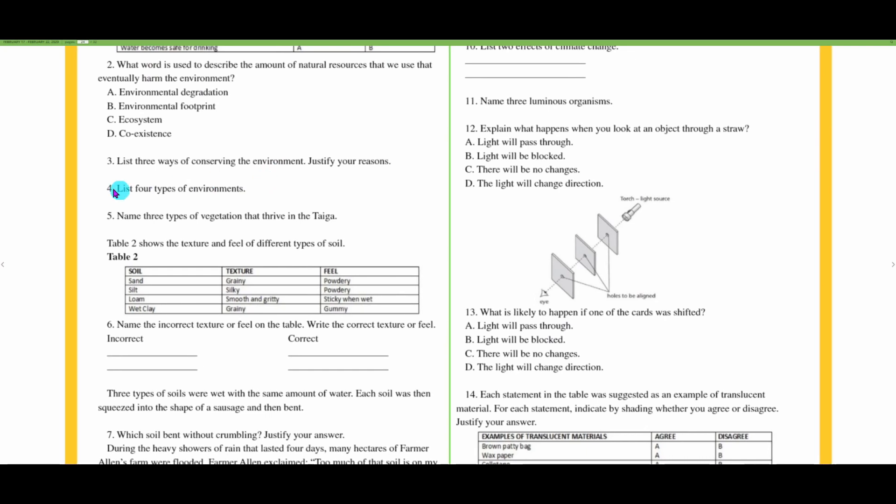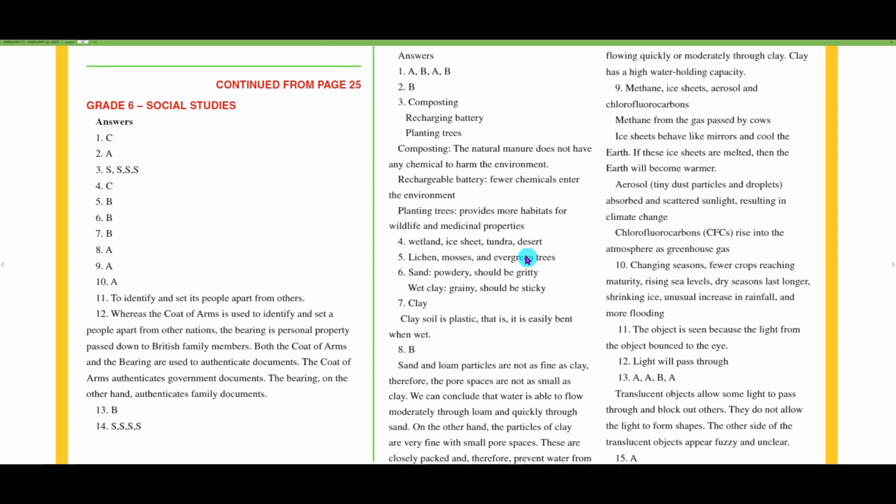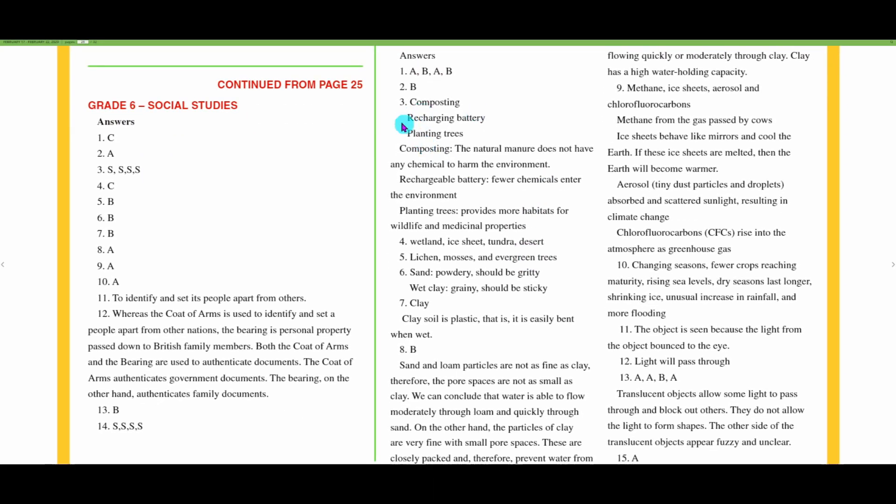Number three: list three ways of conserving the environment. They have composting, recharging batteries, planting trees. Composting: the natural manure does not have any chemicals to harm the environment. Composting would be taking leaves and paper and allowing those to decompose over time, creating natural manure.